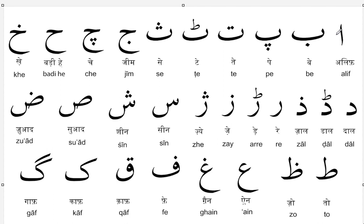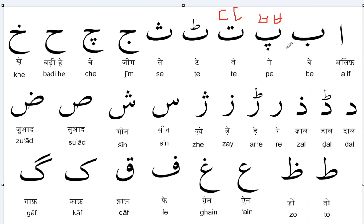Alif, since it's a vowel, does exist in Korean. Pe also exists — there is a sound which resembles Pe, like the double consonant form which is more stressed. Similarly, the double consonant form of Pe is a more stressed version. So Pe and its stressed form both exist.